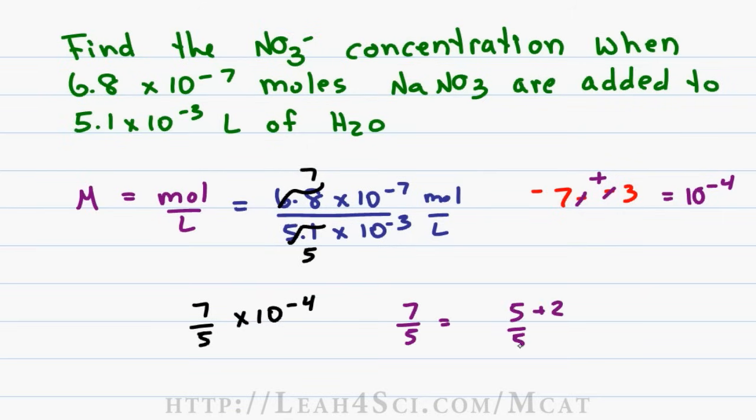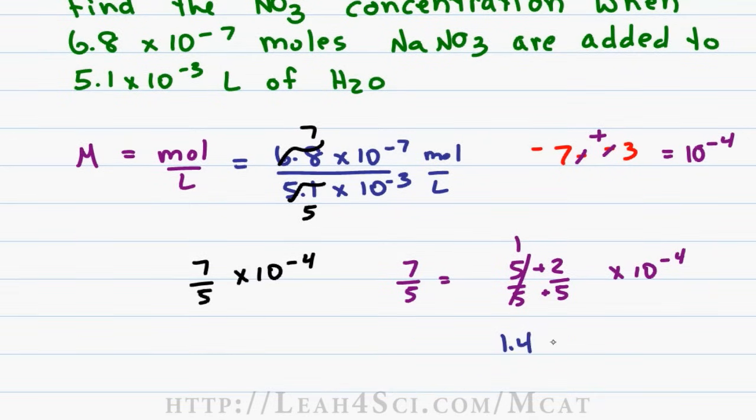7 over 5 is really 5 over 5 plus 2 over 5. 5 over 5 is 1, so we have 1 and 2 over 5 times 10 to the minus 4. 2 over 5 is a fraction you should recognize because 1 over 5 is 0.2, therefore 2 over 5 is 0.4. This gives us a final answer of 1.4 times 10 to the minus 4.